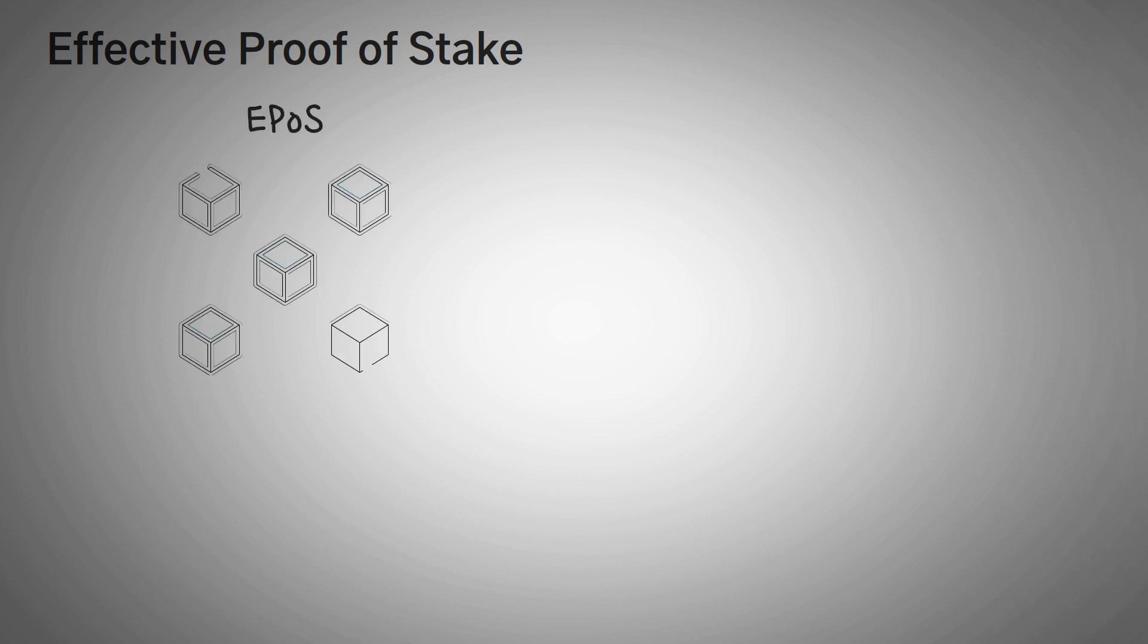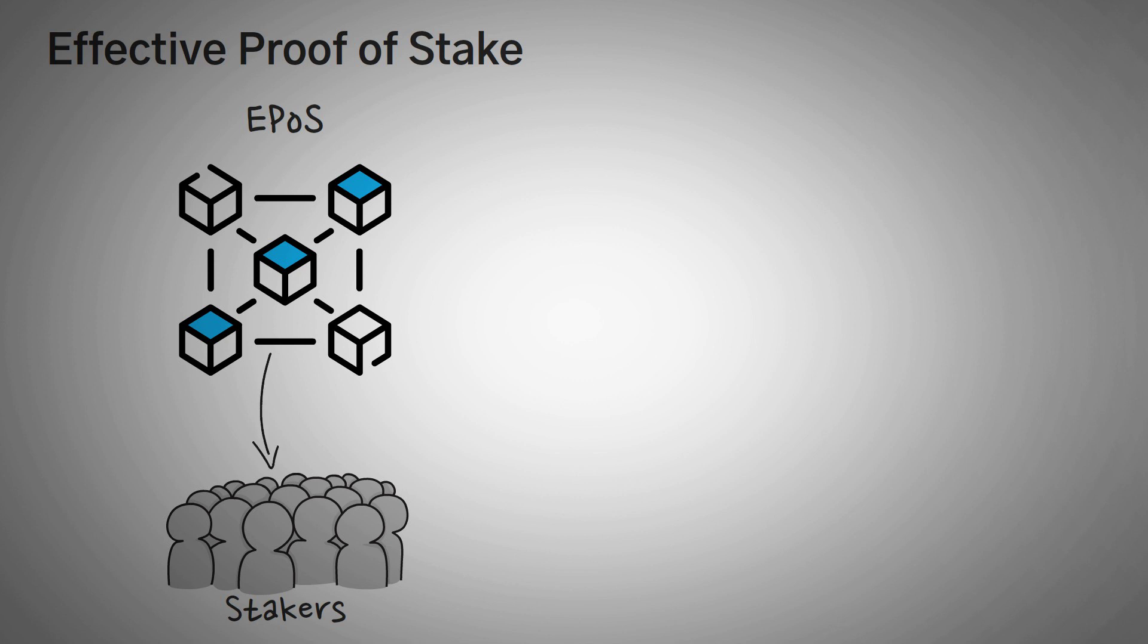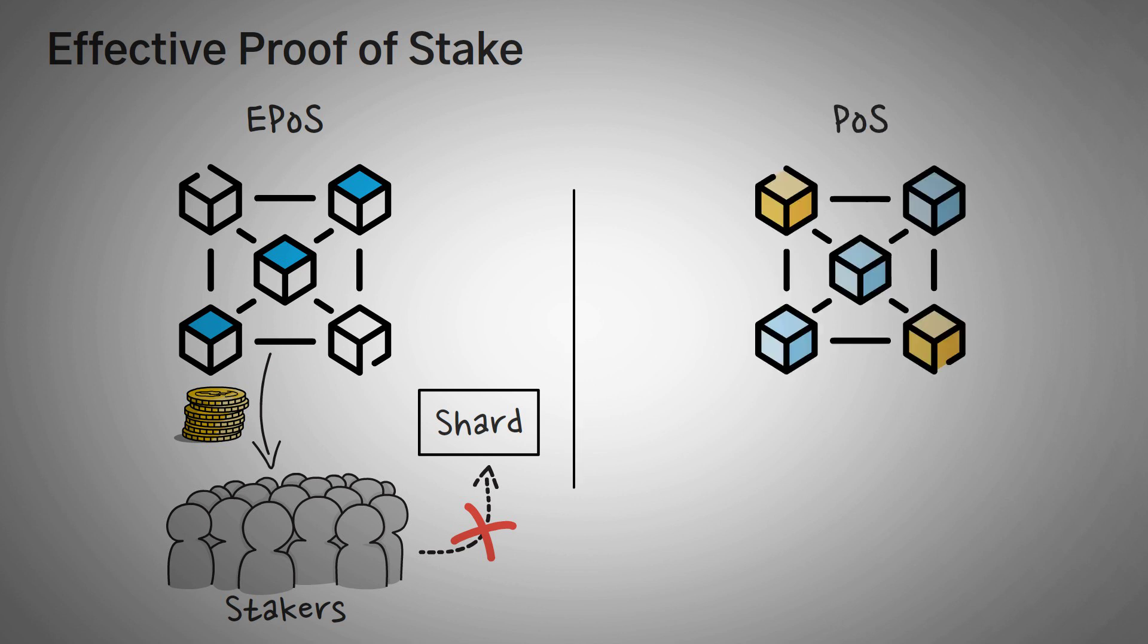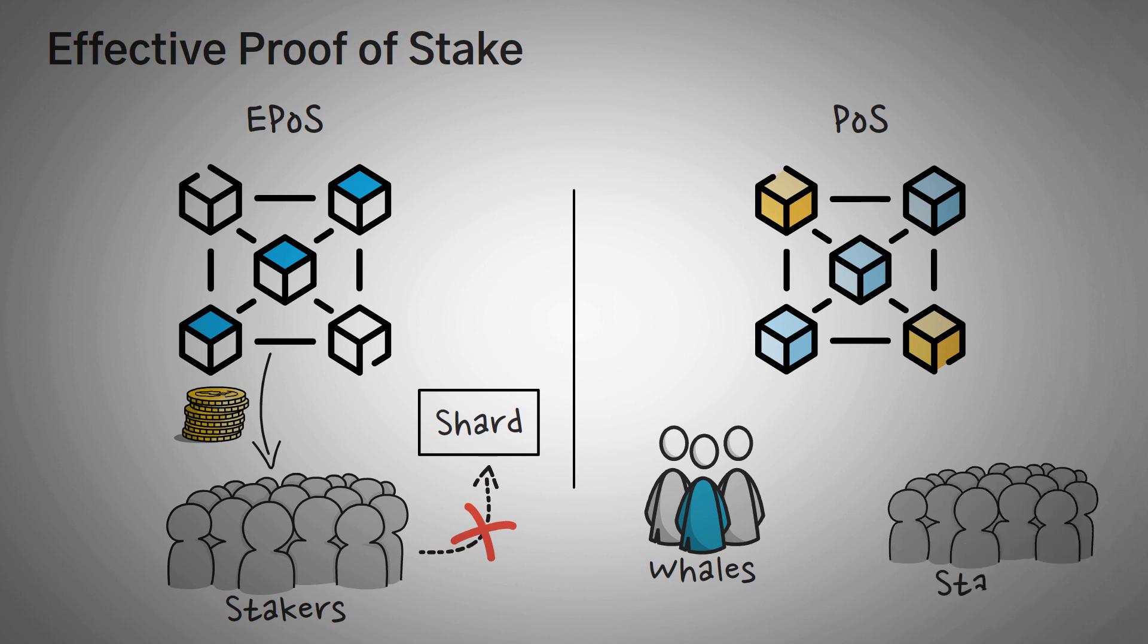Now, Harmony's effective proof of stake is a clever way of making sure that stakers are still rewarded while also preventing stakers from taking over an entire shard. In a normal proof of stake mechanism, inequality becomes a huge issue because it's easy for the power in a network to be controlled by those with most of a certain token.